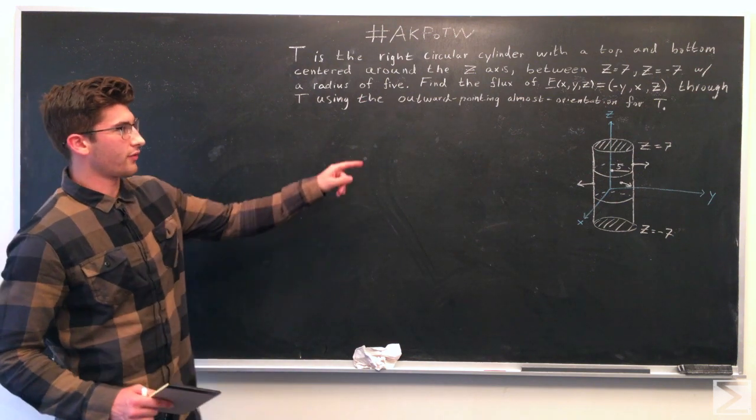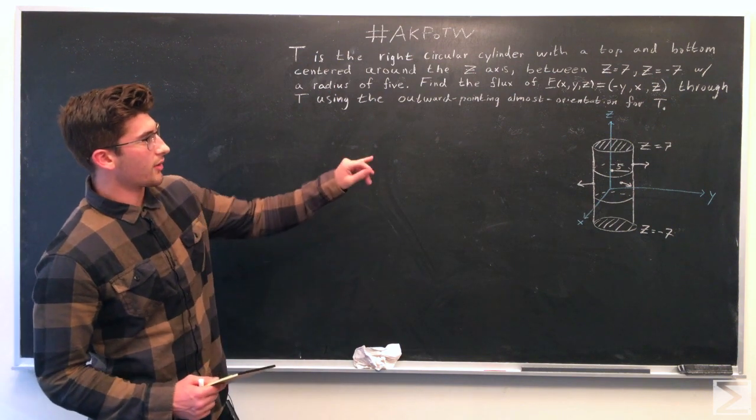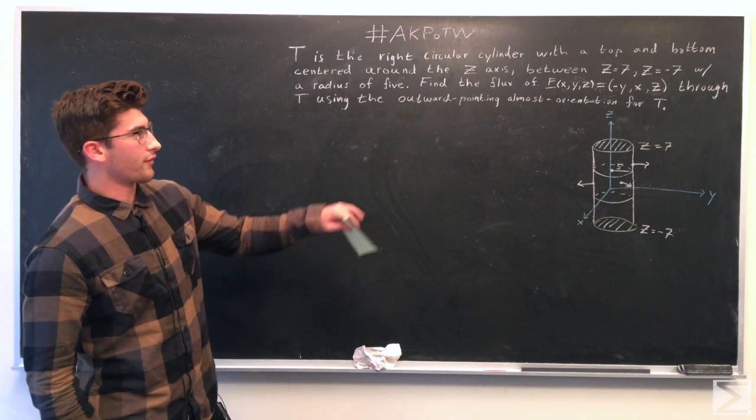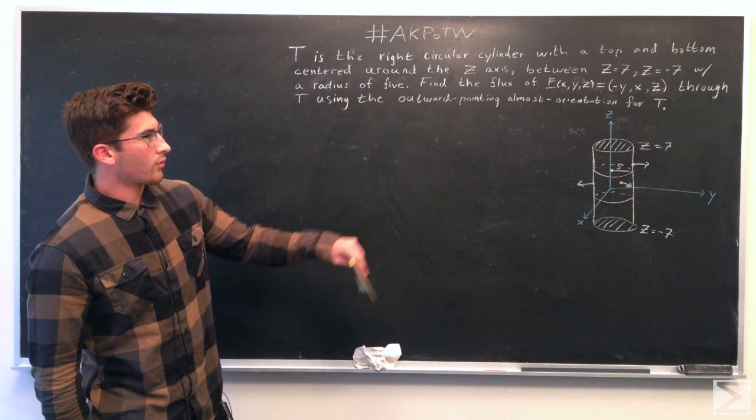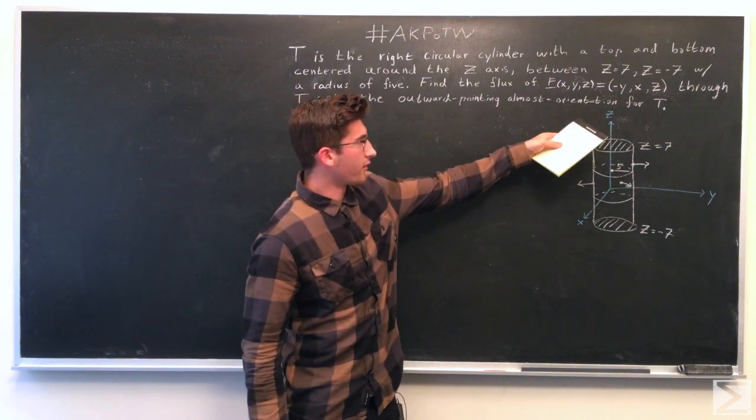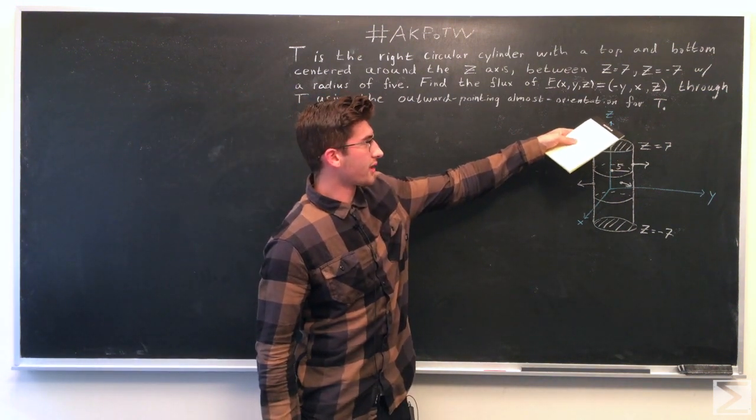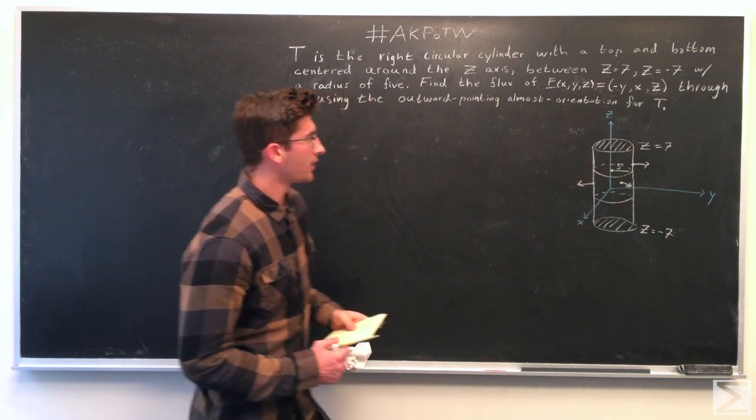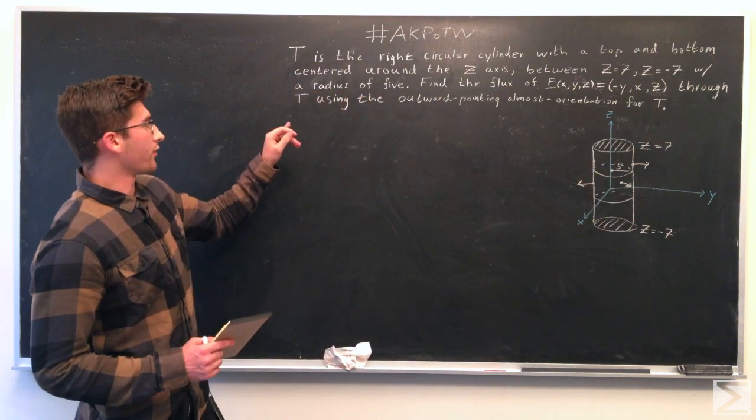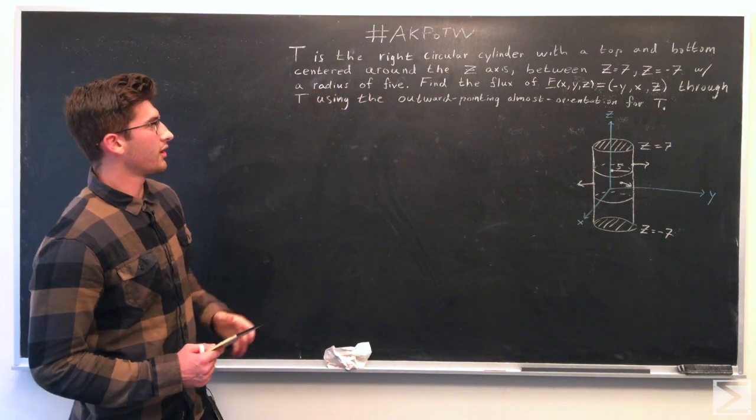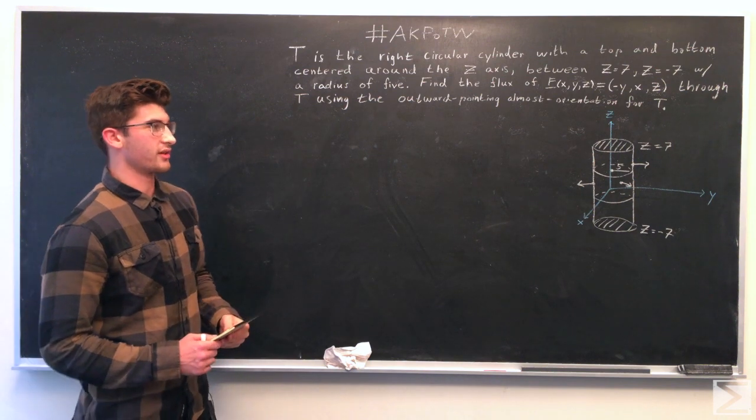We're being asked to find the flux of the force f, a function of x, y, and z, where the x component is negative y, the y component is x, and the z component is z. That's going to be the flux of that force through T using the outward pointing normal orientation for T.